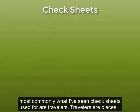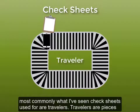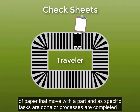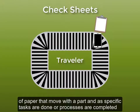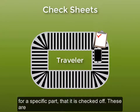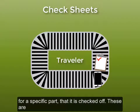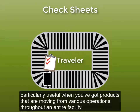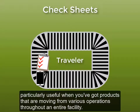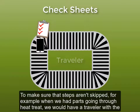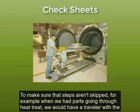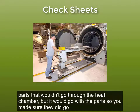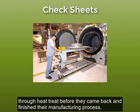Most commonly what I've seen check sheets used for are travelers. Travelers are pieces of paper that move with a part, and as specific tasks are done or processes are completed for a specific part, it's checked off. These are particularly useful when you've got products moving from various operations throughout an entire facility to make sure that steps aren't skipped. For example, when we had parts going through heat treat, we would have a traveler with the parts so that you made sure that they did go through heat treat before they came back and finished their manufacturing process.